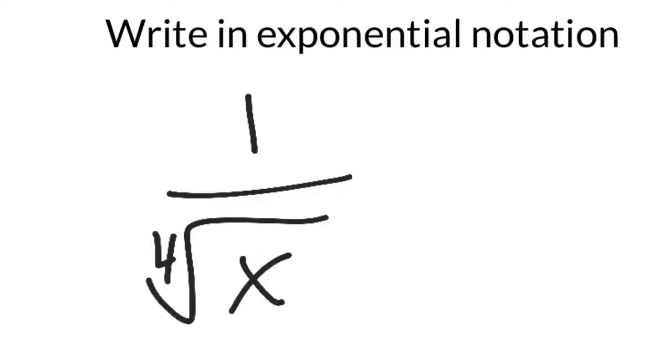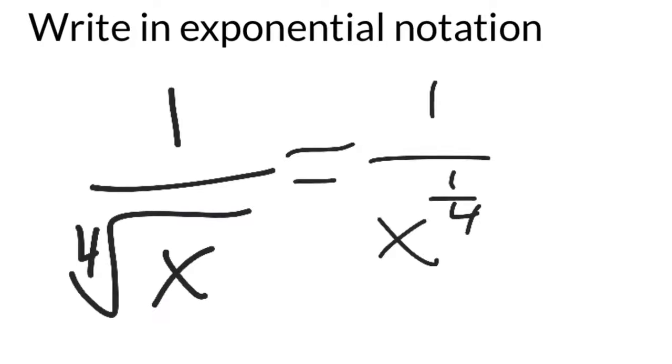There's a few ways you can write this as an exponent. A fourth root means something to the one-fourth power. A square root is actually something to the one-half power.